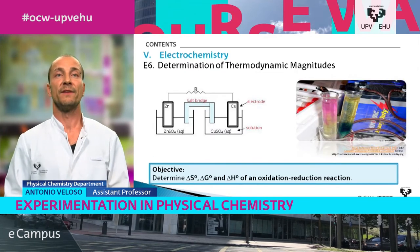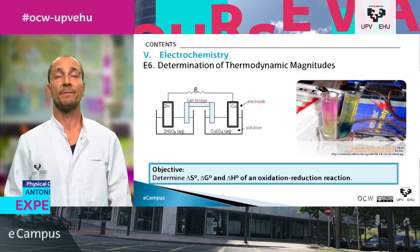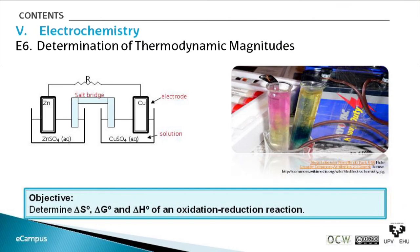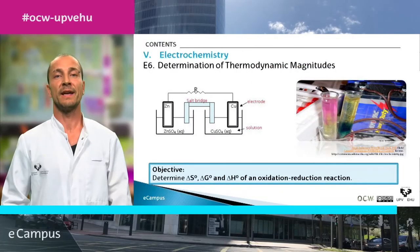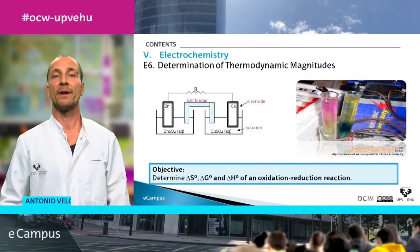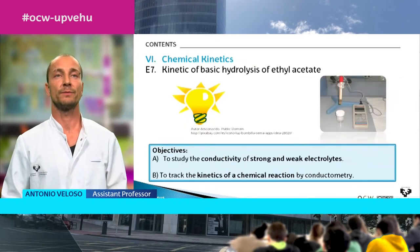The fifth lesson is about electrochemistry. The experiment is entitled Determination of Thermodynamic Magnitudes. The main objective is to determine the entropy, Gibbs energy, and enthalpy variation of an oxidation-reduction reaction.